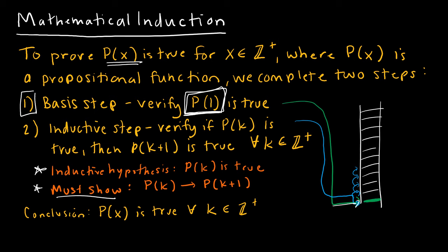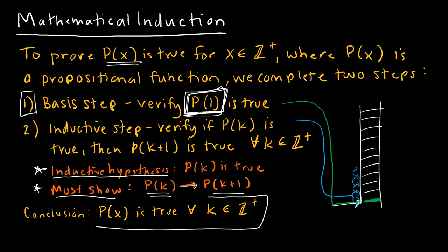You will also see me write 'must show.' A lot of instructors don't write what you must show, and then at the end they say this is true because I showed this. I like to be very explicit — here's what I'm assuming is true, and because that's true, does that imply that p of k plus 1 is true? If p of k implies p of k plus 1, and I can get to the first rung, then I can get to every rung, and my conclusion will be that whatever I'm trying to prove is true for all k that are positive integers.